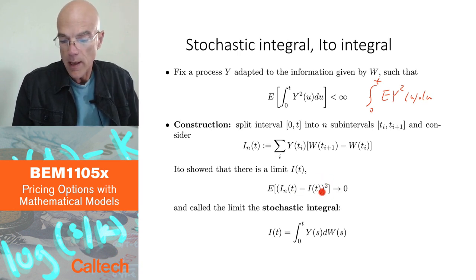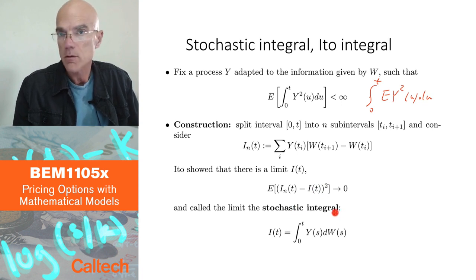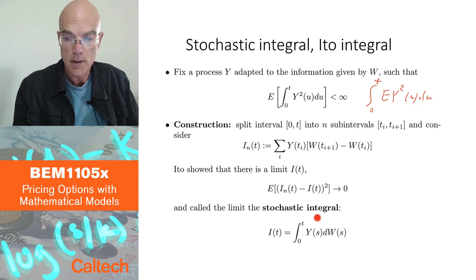And then it's natural to call this limit the stochastic integral. Now it's also called Ito's integral. That's the limit of these things exist. It's like a gains process, and we are going to denote it like this. And we are going to call it stochastic integral.